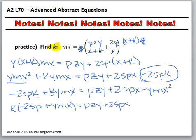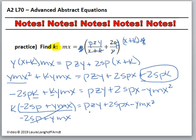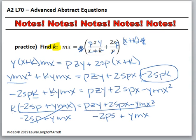PZY plus 2SPX minus YMX squared. Then we simply divide by negative 2SP plus YMX — it cancels. So we're left with K on one side. K equals PZY plus 2SPX minus YMX squared, all over negative 2SP plus YMX — or, as the book has it, YMX minus 2PS. Either way, it's all good. I'm going to put this equals K over here so that I can put my box around it.